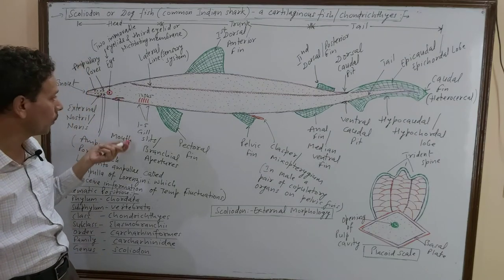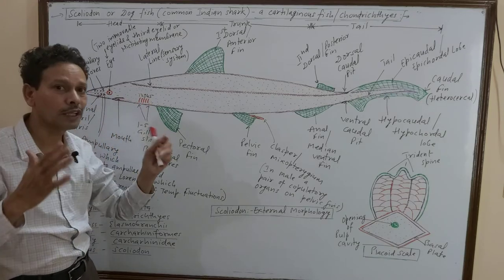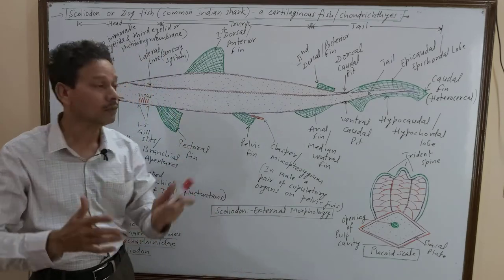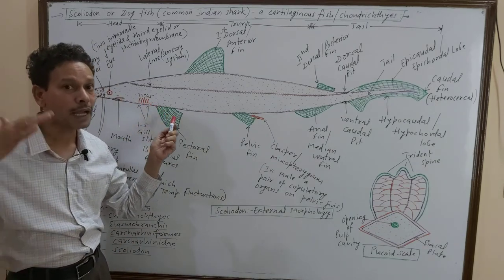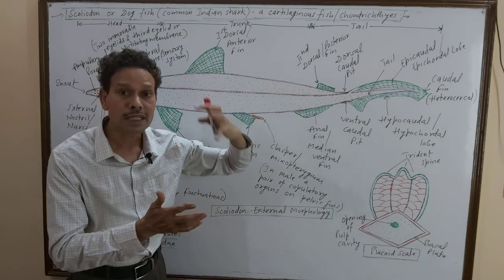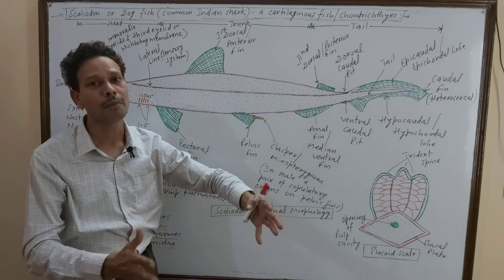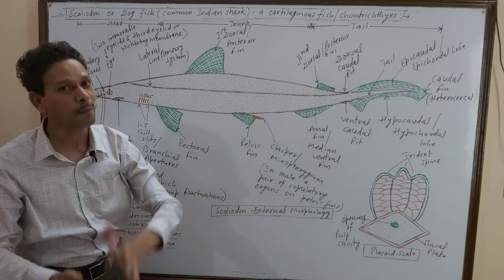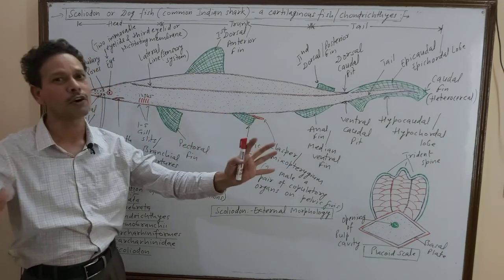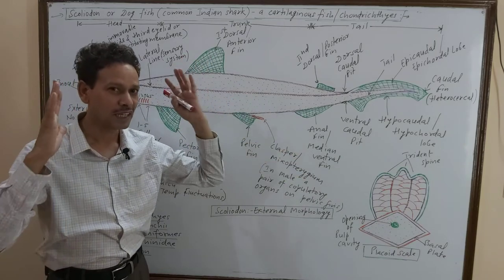The mouth is ventral. On the head region you can see one, two, three, four, five — five pairs of gill slits, the branchial apertures, externally visible on both sides. But in case of bony fish like Labeo, the gill slits are not visible externally because they are covered by the gill cover — the gill operculum. In case of cartilaginous fish, the external gill slits are open without any operculum.